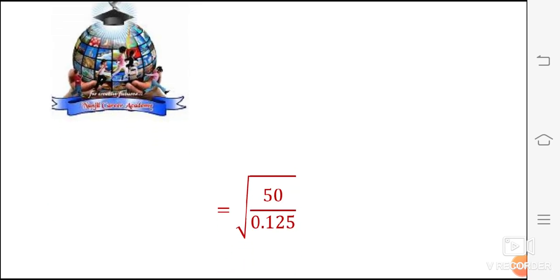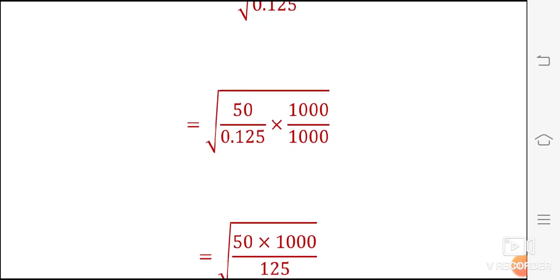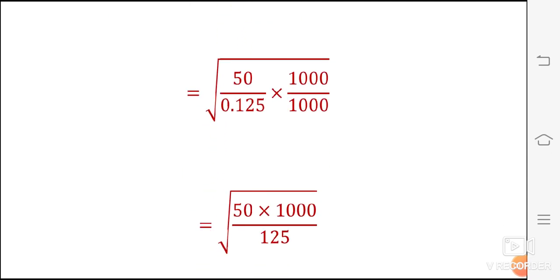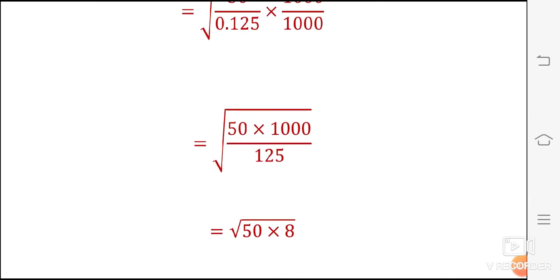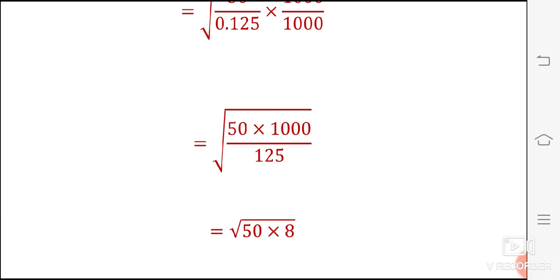In this equation we get root of 50 divided by 0.125, equal to square root of 50 divided by 0.125 into 1000 divided by 1000. So that is equal to square root of 50 divided by 1.25. So cancelling, this is 1 to 8. 8 into 25 is equal to 1000. So it equals square root of 50 into 8.